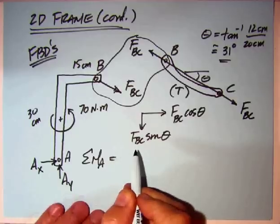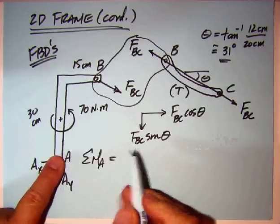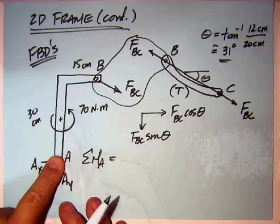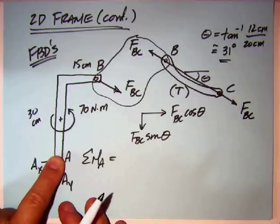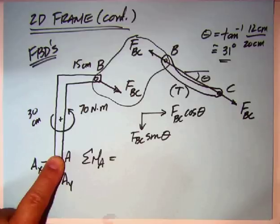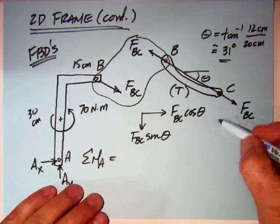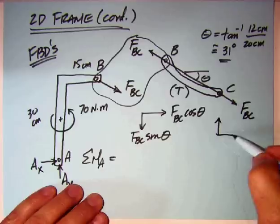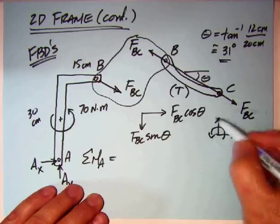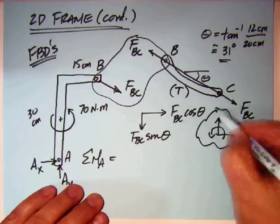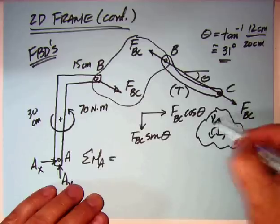We're ready to write down the sum of the moments about A equal to zero. Also, the 70 newton-meter - you've got to watch units here, centimeters and meters. The horizontal component produces a clockwise moment. Remember, we have our coordinate system x, y, and moment from other problems that we've done: x, y, and counterclockwise.